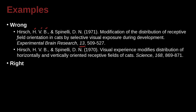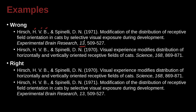We've got two entries here, and we run into a special problem: the exact same author names in different entries — Hirsch HVB and Spinelli DN. So we have two different papers by the exact same authors. How do we order this in our list? We first go by the names, and when the names are identical we go by the next bit of information, which is the date. So 1970 comes before 1971, and that's how we order them.